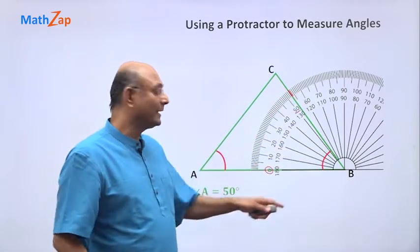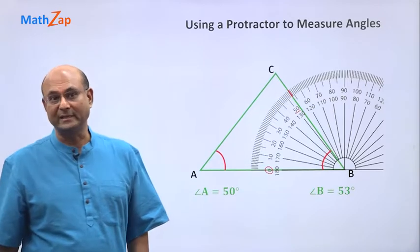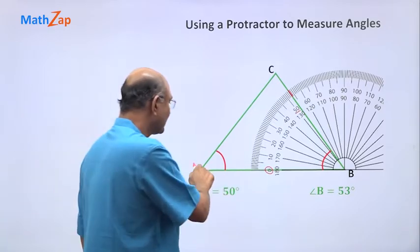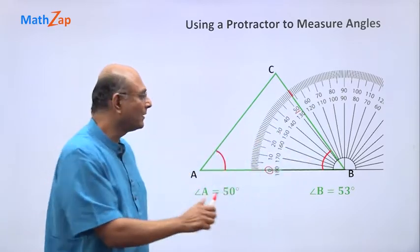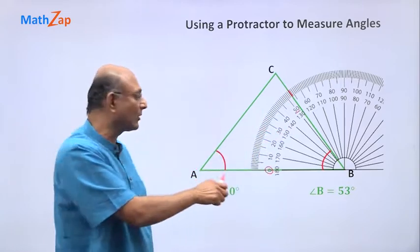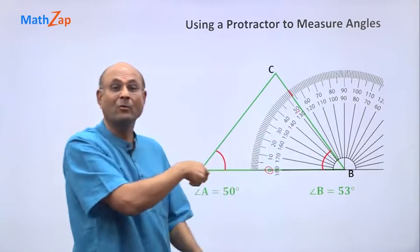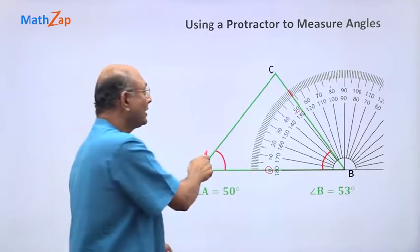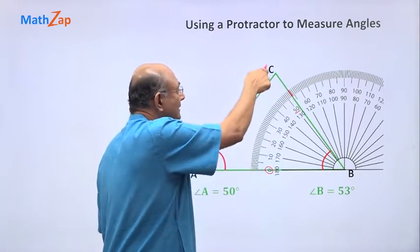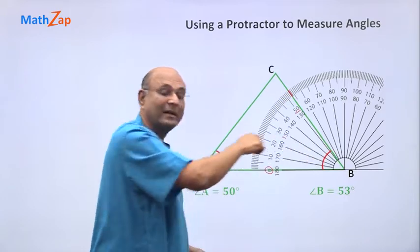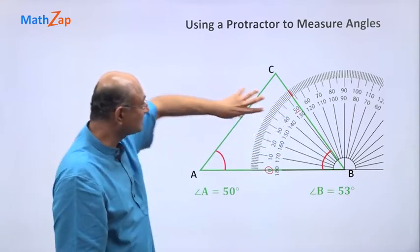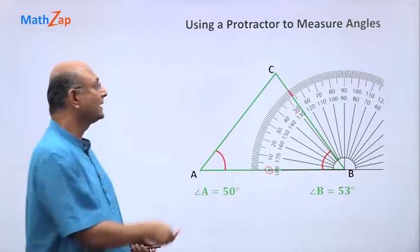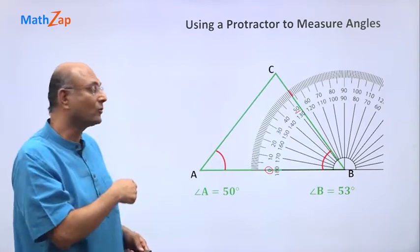Okay, so these two we were able to measure without turning the protractor around because the baseline was already matching with AB. Now if I want to measure angle C, this is one of the arms, that is another arm, so the protractor must be turned to fit with this arm. We're going to turn the protractor around.